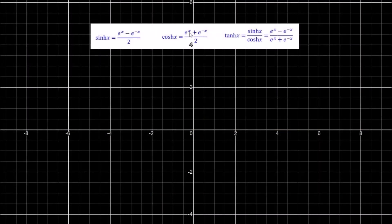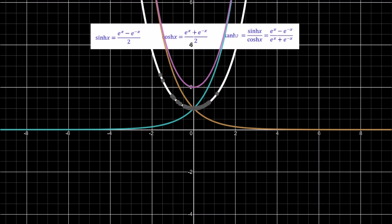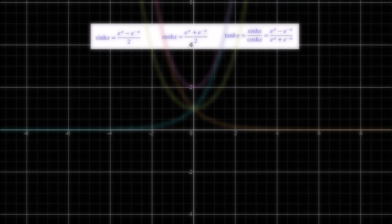For the cosh function: we have e^x and e^(−x), then add them together and divide by 2. This gives the green curve — the cosh function. Plotting the cosh function directly, it sits right on top, confirming that cosh x equals (e^x plus e^(−x)) / 2.